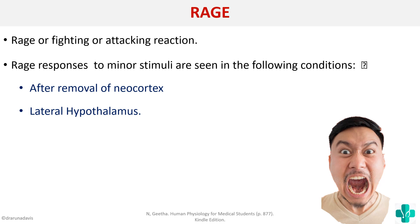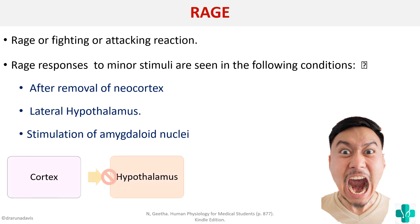The cortex always inhibits the hypothalamus, while the hypothalamus tonically activates the amygdala. If the cortex is absent, the hypothalamus will continuously stimulate the amygdala, causing rage. Similarly, a lesion in the lateral hypothalamus or direct stimulation of amygdala nuclei also causes rage. Placidity, meaning calmness, occurs when there is a bilateral lesion of the amygdala — the person will not be afraid or angry.